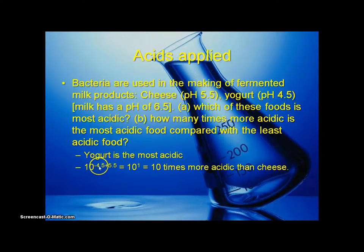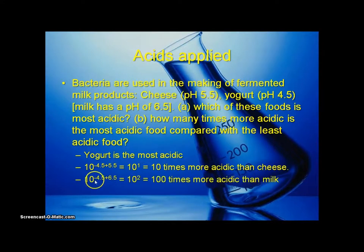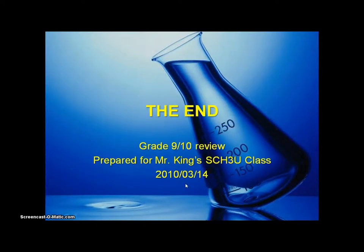Remember that hydrogen ion concentration equals 10 to the power of negative pH, and you can subtract the pH values. For yogurt vs. cheese: 10^(−4.5 + 5.5) = 10^1, so yogurt is 10 times more acidic than cheese. Comparing yogurt to milk: 10^(−4.5 + 6.5) = 10^2, so yogurt is 100 times more acidic than milk. That's the end — hopefully you've learned a lot, and we'll move on to the Grade 11 review.